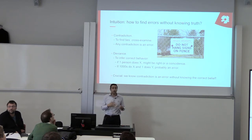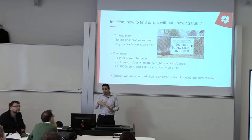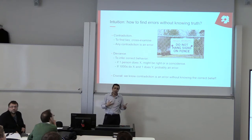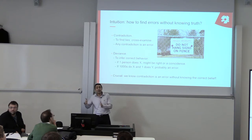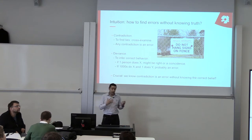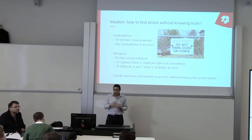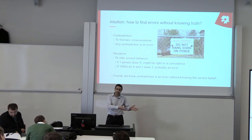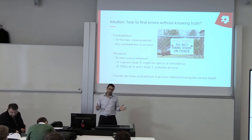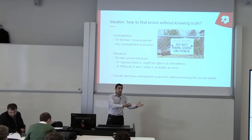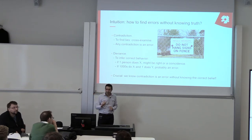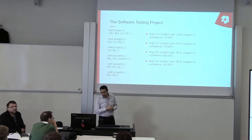This is based on the fact that in order to find lies we can cross-examine the must-beliefs. If you cross-examine two must-beliefs and find a contradiction, this is 100% an error. While in deviance, to infer correct behavior: if a hundred or a thousand people say yes and one says no, then that one is wrong. This is the main idea.